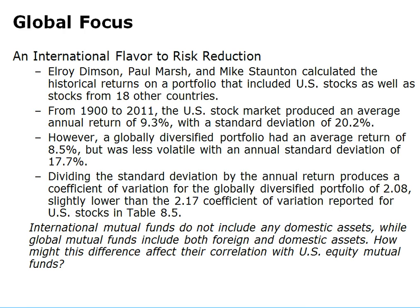Because the average returns are different, we have to use the coefficient of variation by dividing the standard deviation by the actual annual returns. This produced a globally diversified portfolio coefficient of variation of 2.08%, which is slightly lower than the 2.17% coefficient of variation reported from U.S. stocks, showing that investing in the diversified international portfolio was less risky than U.S. stocks, thereby proving that concept.